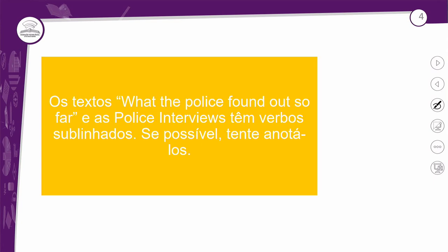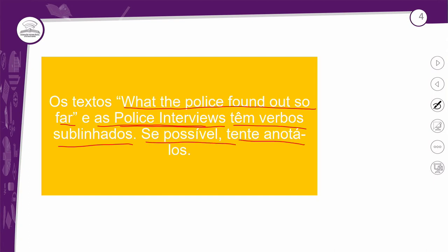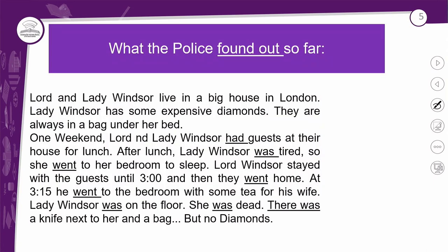Os textos 'What the police found out so far' e 'As police interviews' têm verbos sublinhados — tente anotá-los. A gente vai ter acesso a textos em inglês sobre esse thriller. 'Found out' vem da expressão 'find out' no presente, que significa descobrir. 'So far' significa 'até agora'. Então: o que a polícia descobriu até agora. 'Find out' está no passado como 'found out'; trata-se de um phrasal verb que estudaremos no segundo ano.